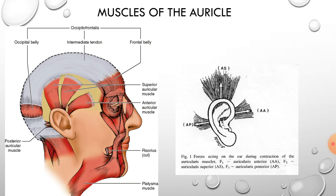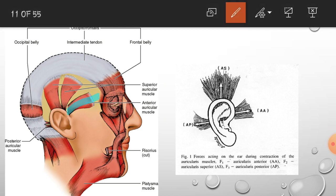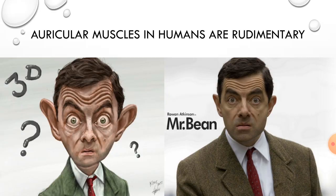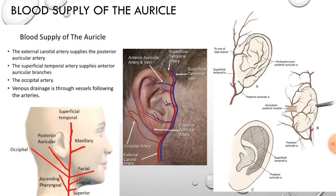Now talking about the muscles of the auricle: there are three muscles — auricularis anterior, auricularis superior, and auricularis posterior. In this diagram you can see these three muscles. In humans these muscles are rudimentary or vestigial, while in lower animals they help move the auricle to direct sound into the ear.